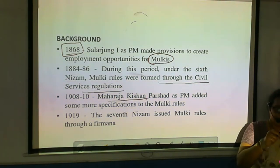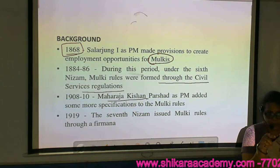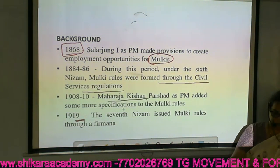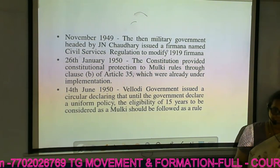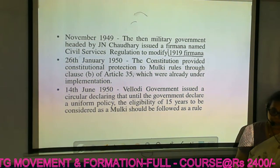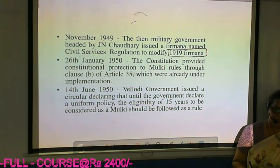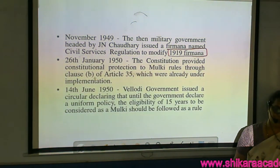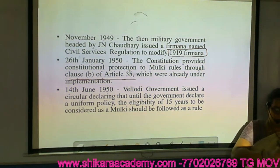Maharaja Kishan Prasad's definition of Mulki was also given — according to him there were 4 points. Then in 1919 we had the farmana. In November 1949, the J.N. Chaudhary government made changes to the 1919 farmana. Then on 26th January 1950, the Constitution provided constitutional protection to Mulki rules through Article 35 Clause B.